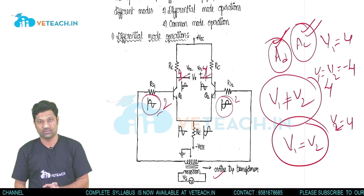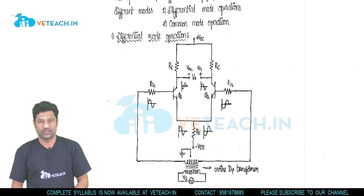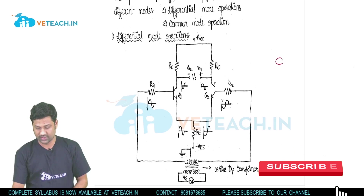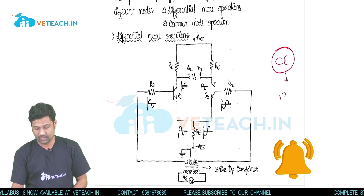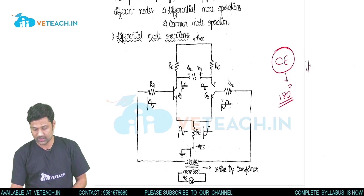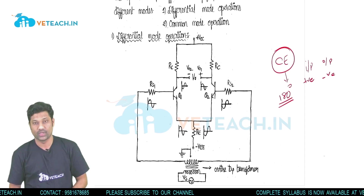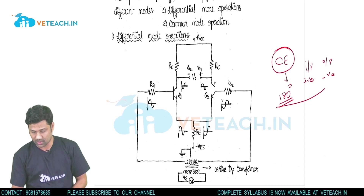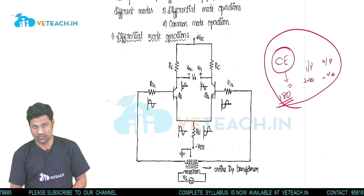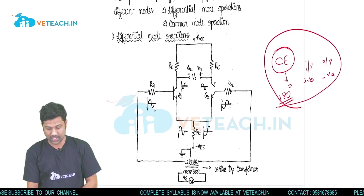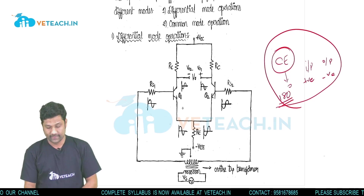Before discussing the differential mode operation, we need to review the CE amplifier. In a CE amplifier, there is a 180-degree phase shift between input and output — if the input is a positive-going signal, the output will be a negative-going signal. This phase shift property helps us understand the operation of the differential mode.